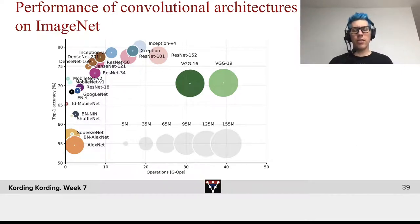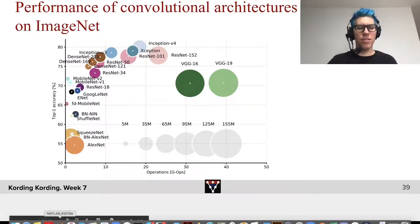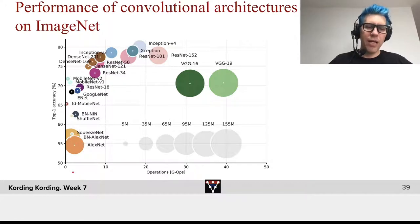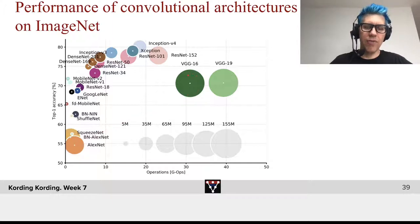Let's look a little bit — we talked about all the different architectures, and it was very fast. Let's talk a little about what the effect is. This graph is really nice at highlighting this. On this axis, we have the runtime, basically that we need for training. On this axis, we have the top-one accuracy. And then as the size of these dots, we find how many parameters there are.